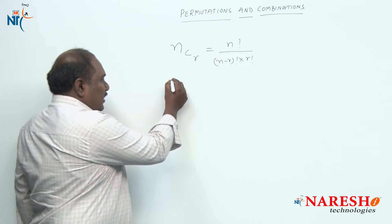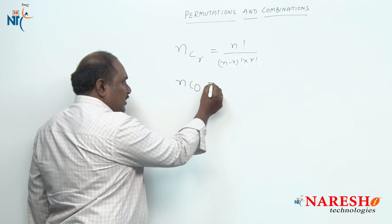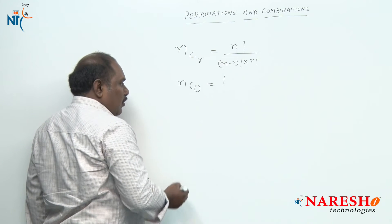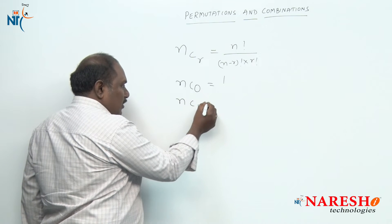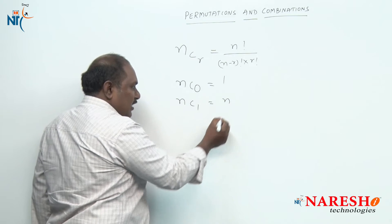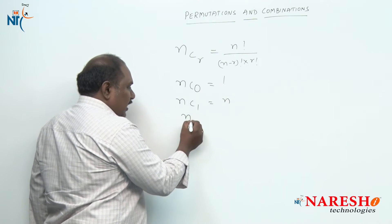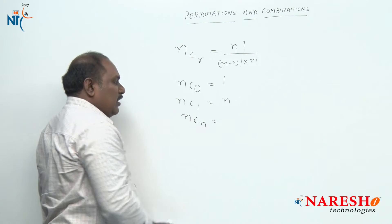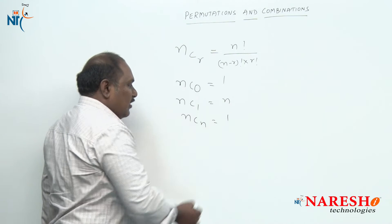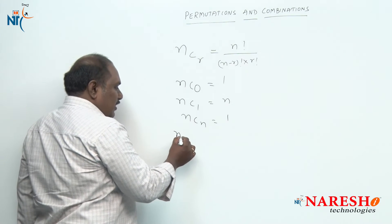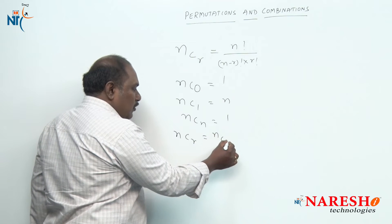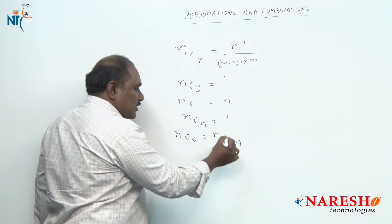NC0, that is not selecting anything out of n different things, is given by 1. NC1, selecting 1 out of n different things, can be done in n different ways. NCn, selecting all n things out of n things, is done in one way. We also have the formula: NCR is equal to NC(n minus r).